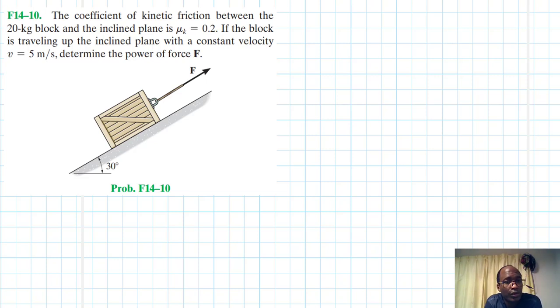Hello, I welcome you all. The coefficient of kinetic friction between the 20 kg block and the inclined plane is 0.2. If the block is traveling up the inclined plane with a constant velocity of 5 meters per second, determine the power of force F. This problem is coming from Engineering Mechanics and Dynamics, 14th edition by R.C. Hibbeler.